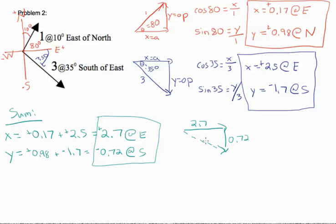To get the magnitude, we do 2.7 squared plus 0.72 squared equals c squared. And we get that our magnitude is 2.8.